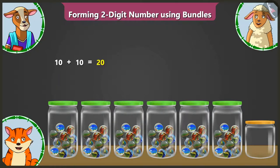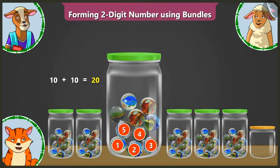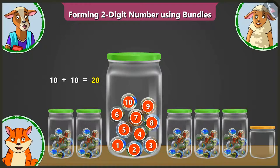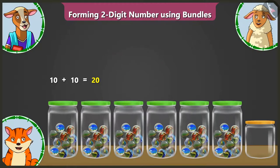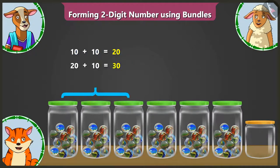Now look, here in the third jar, there are one, two, three, four, five, six, seven, eight, nine and ten marbles. So this makes it ten and ten — twenty; twenty and ten — thirty. Three groups of tens.